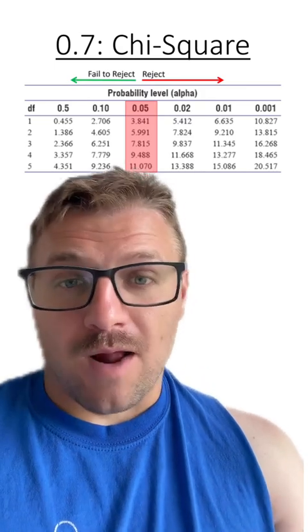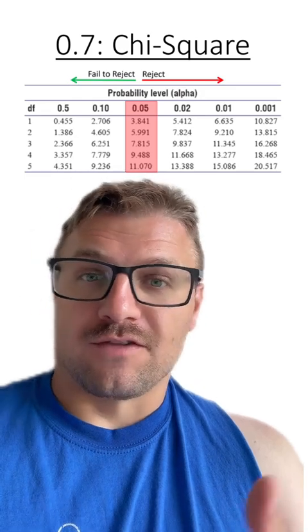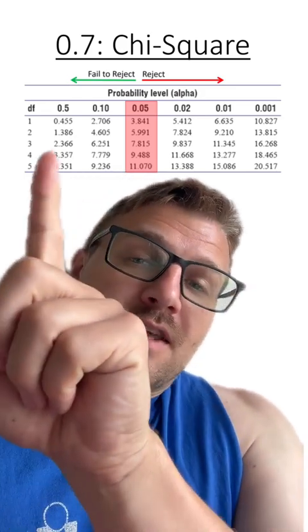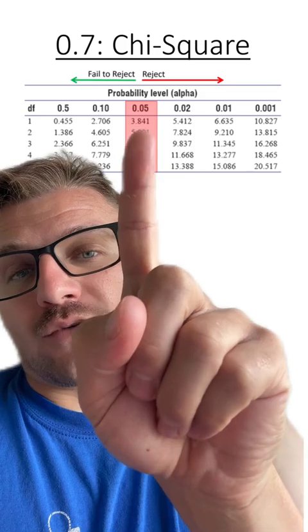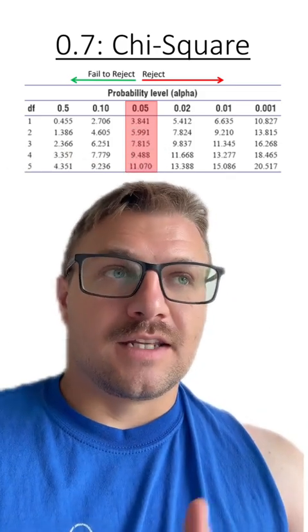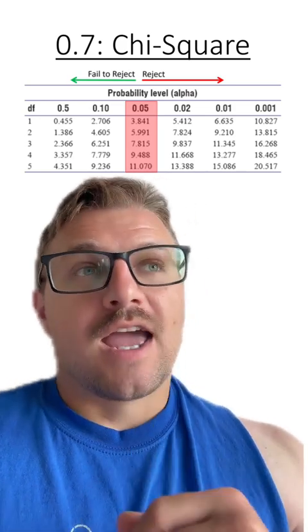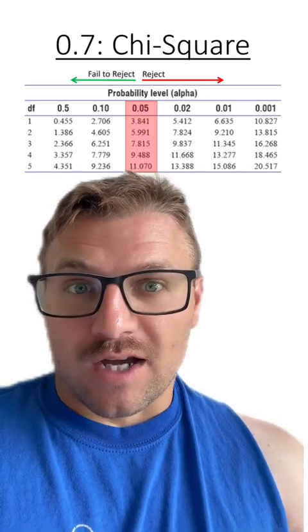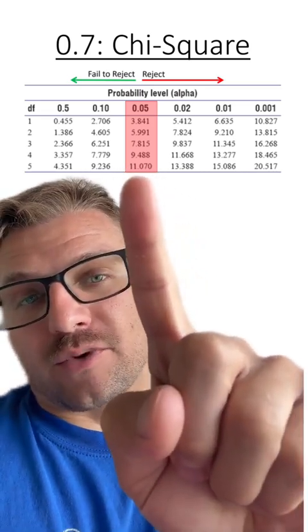For our first practice problem for this equation, we're actually going to use the heads or tails flipping of a coin. That means that the degrees of freedom is going to be on that first line, which means our critical value is going to be 3.841. For our second example problem, we're going to look at rolling a dice, one dice, which means there's going to be six outcomes. So six minus one is five. So our critical value is 11.070.